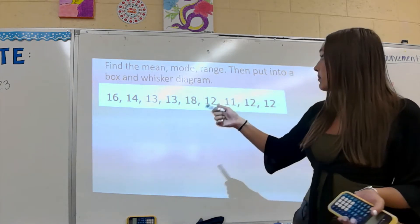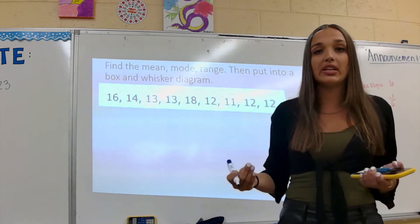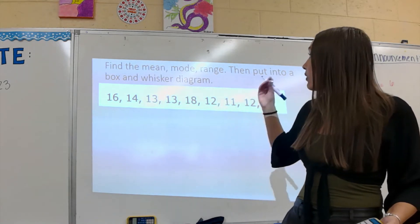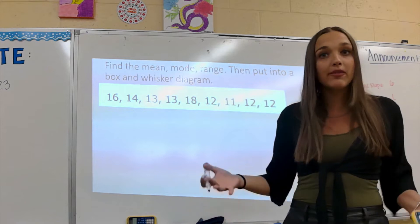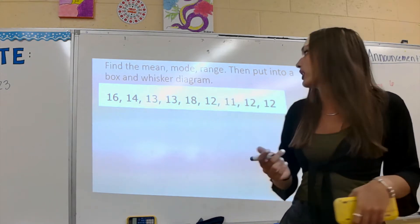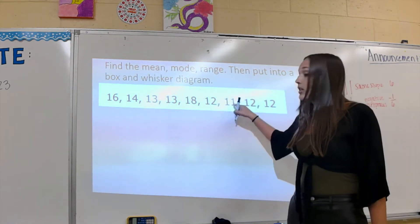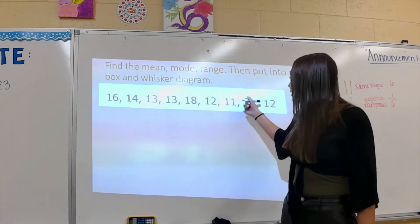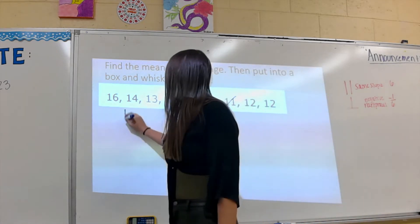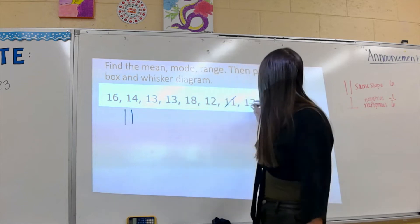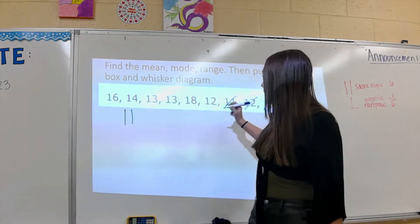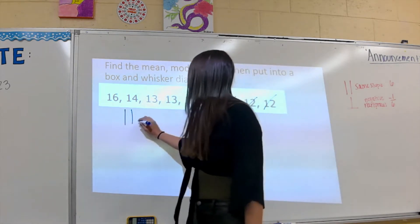My first step when I'm given these numbers is to put them from least to greatest because we need that for our medians. So I'm going to start with 11 because that's my smallest number. I crossed it out so I remember I wrote it down. Then I have 12 here, 12 here, and another 12 here. So I have three 12s.